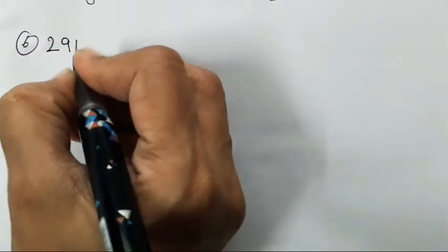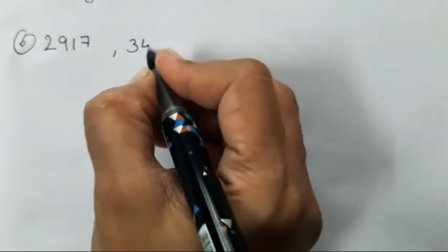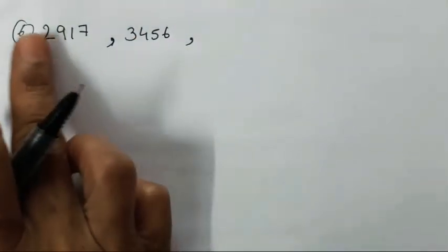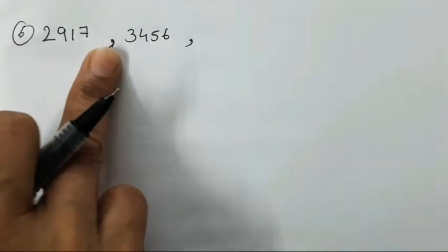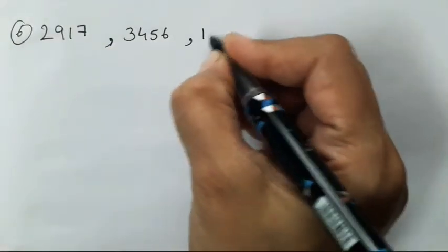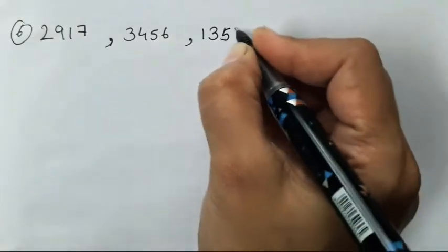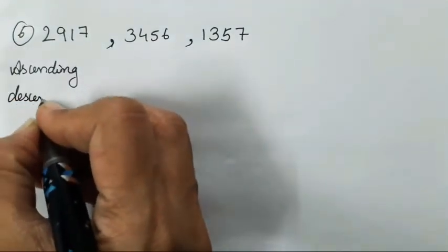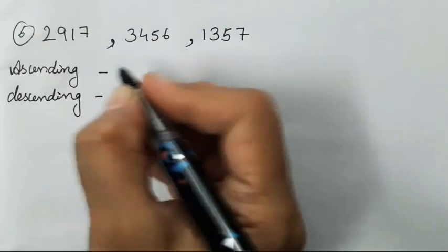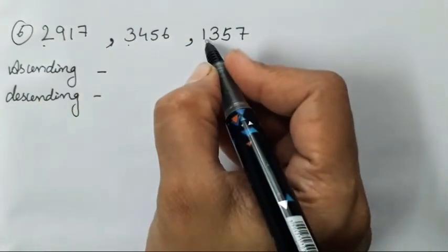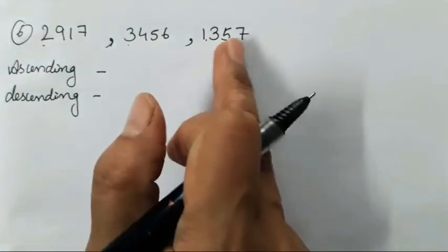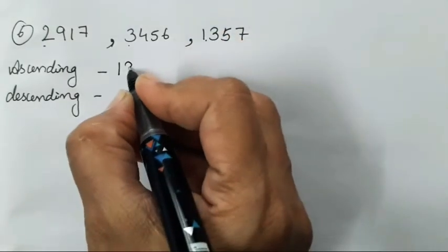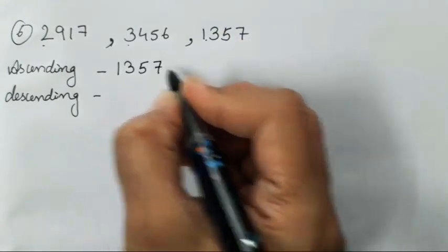Sixth one is 2917, 3456, 1357. I will read it: 2917, 3456, 1357. Ascending and descending. The first digits are 2, 3, 1. So which is going to be smaller? 1 is going to be smaller. So 1357 first you have to write.